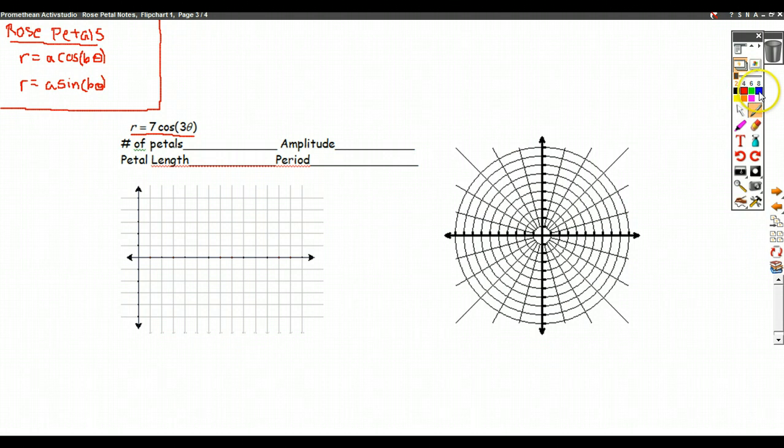And what we noticed was that if b is even, then the number of petals in this rose graph is going to equal 2b.